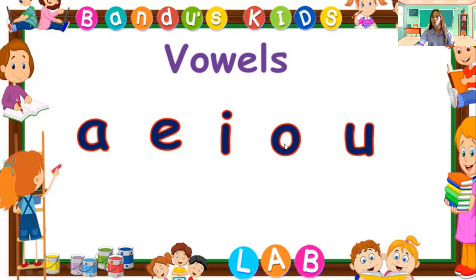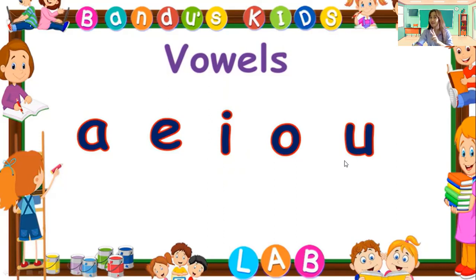Let's proceed to vowel O. What is the sound of vowel O? The sound of vowel O is O. Let's proceed to vowel U. The sound of vowel U is U. Do not be confused — the sound of letter O and letter U are different. The same with letter E and I, they have different sounds. The sound of letter O is soft, while the sound of letter U is hard.